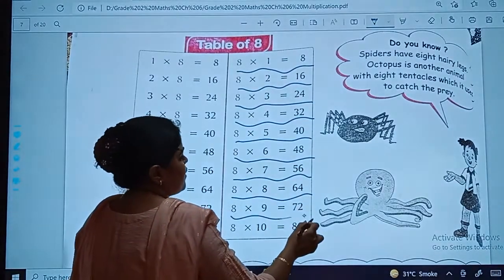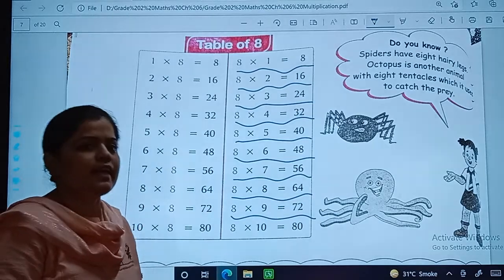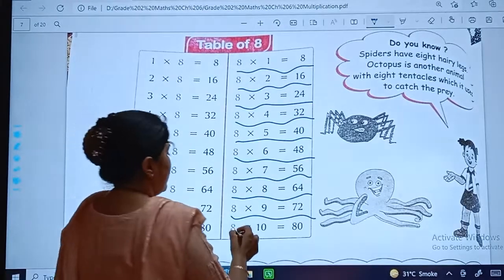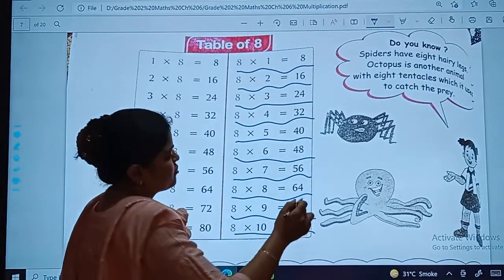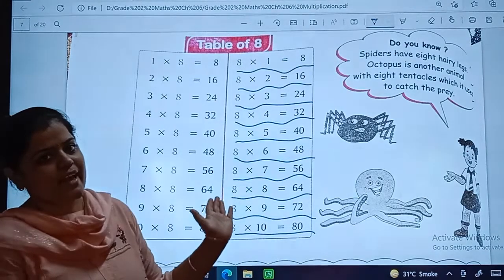8 eights are 64. 8 nines are 72. 8 tens are 80.